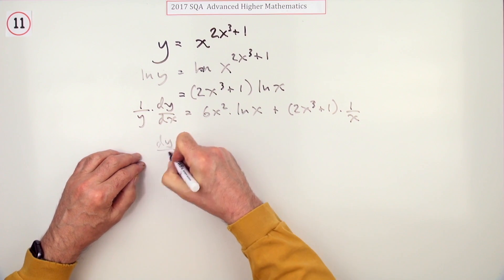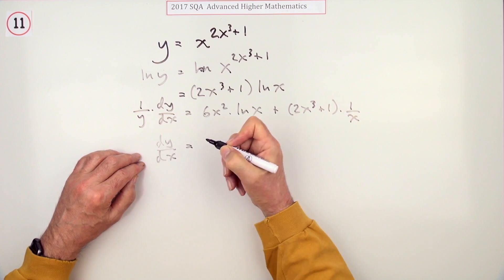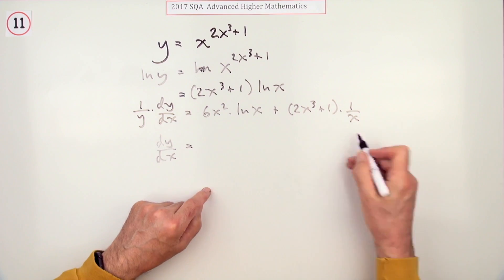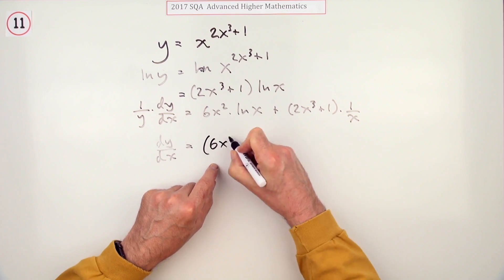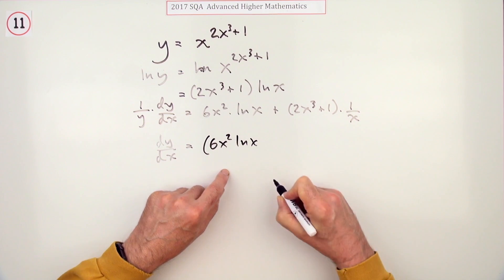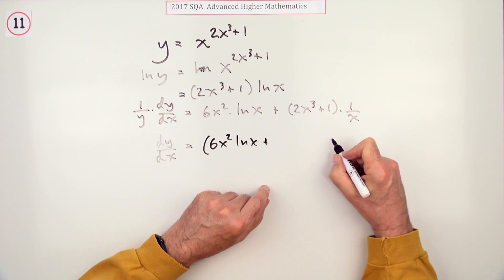Well to get dy by dx I just need to get rid of that y now, so putting that over the other side.